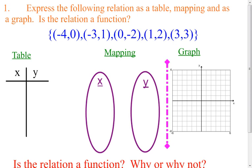First of all, I'm going to give you a relation. In this case, the relation is a set of ordered pairs: negative 4, 0; negative 3, 1; etc. We are going to express that relation in table format. So in table format, we're just going to take each coordinate. Obviously, this is your x and this is your y when dealing with coordinates, so I'm going to put it in an xy table: negative 4, 0; negative 3, 1; 0, negative 2; 1, 2; and 3, 3.